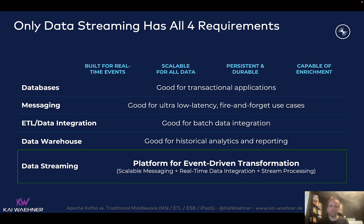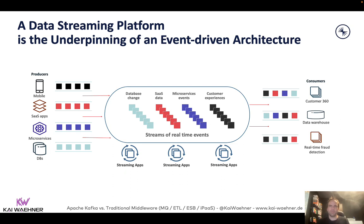Most Kafka deployments I've seen use Kafka for real-time use cases — transactional and analytical workloads — while in parallel ingesting data into other databases and data lakes for reporting, analytics, and training machine learning models. The unique difference of Kafka from other traditional middleware is that it combines real-time messaging at scale, storage for true decoupling and back pressure handling, data integration to any source or sink — including legacy, not just cloud-native — and stream processing for continuous correlation of data. These four characteristics combined into one platform are what makes Kafka so different and so successful.